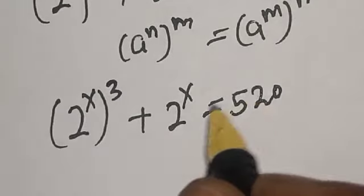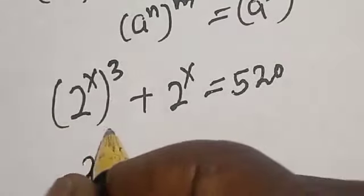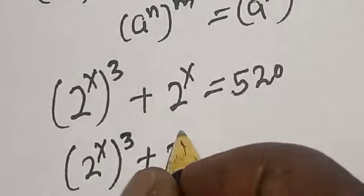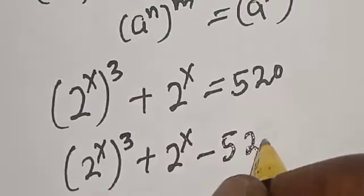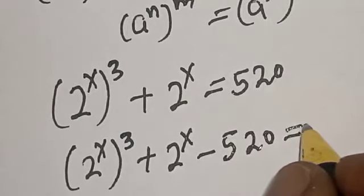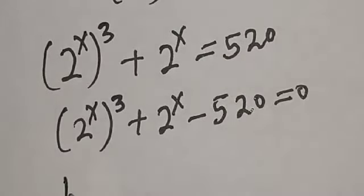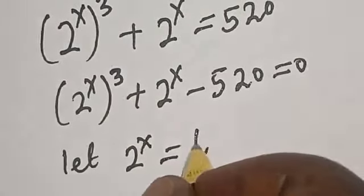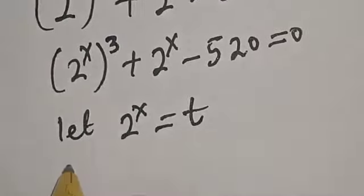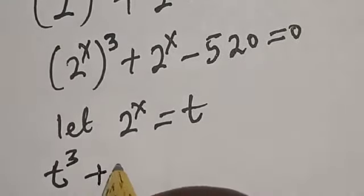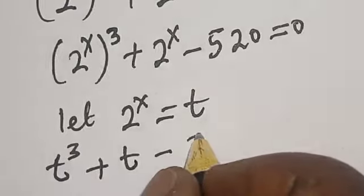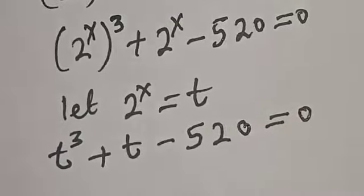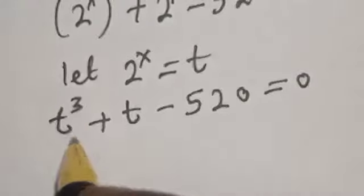Bringing everything to one side: 2 raised to power x, raised to power 3, plus 2 raised to power x, minus 520 is equal to 0. Let 2 raised to power x equal t. Then we have t raised to power 3 plus t minus 520 is equal to 0.